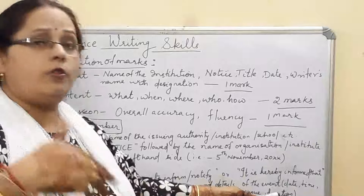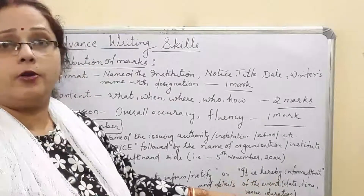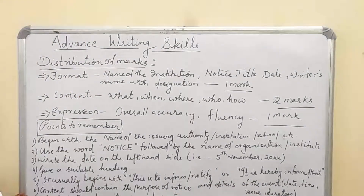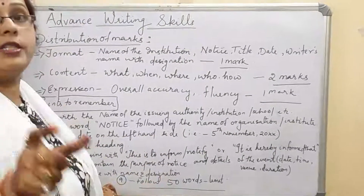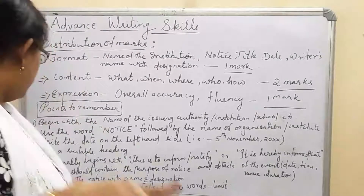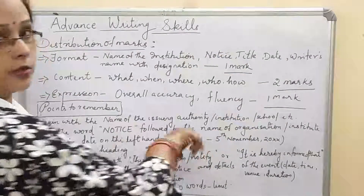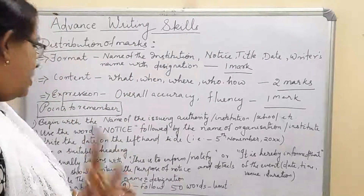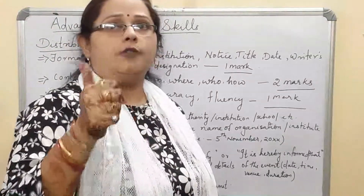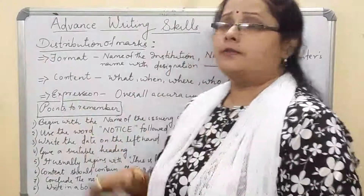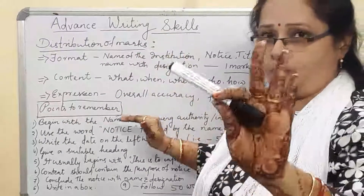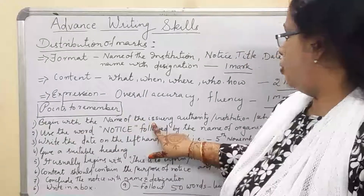The content should contain the purpose of the notice — why you have given it — and the details: what the event is about, the date, timing, venue, duration, and how everything is organized. Conclude the notice with the name and designation. If no name is given, just write 'XYZ'. Most importantly, make a box for the entire notice. Maintain your word limit of 50 words. The entire notice carries four marks: format one, content two, expression one.